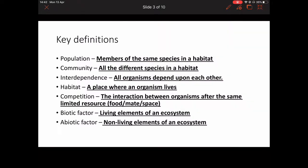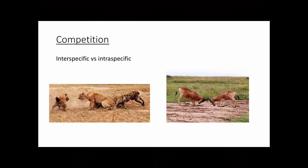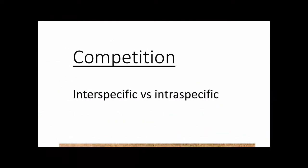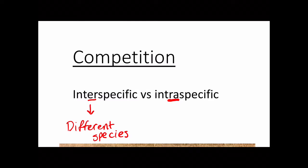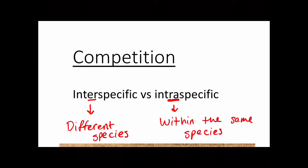The other thing I want to talk about is competition, and you're going to need to write down a couple of definitions. There are two types: inter-specific competition and intra-specific competition. Inter-specific competition is when you have competition between different species, whereas intra-specific competition is when you get competition within the same species. So: inter-specific — different species; intra-specific — within the same species.